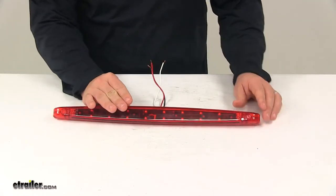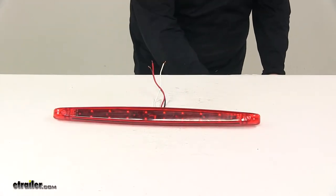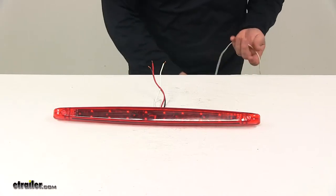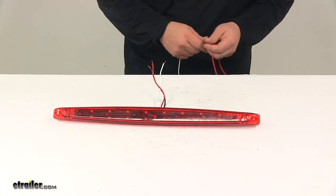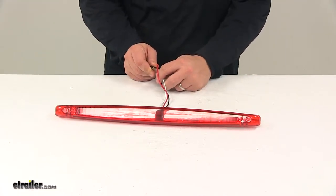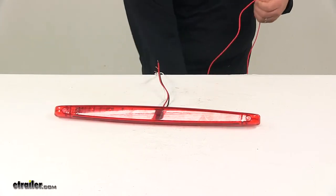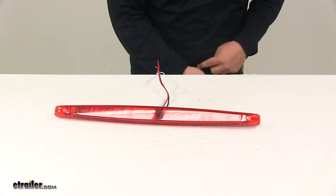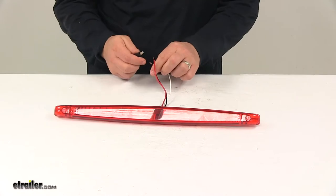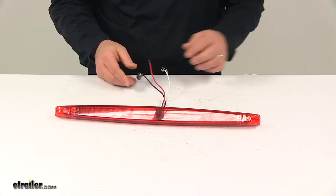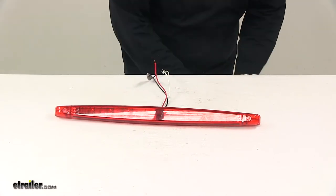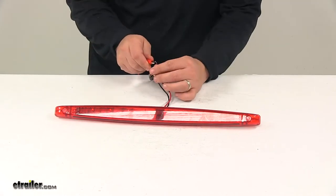We're going to go ahead and hook it up to power so you can see what it looks like with some power running to it. Again, the white wire here is our ground wire. Black is for our running lights, and then red is for the stop and turn.